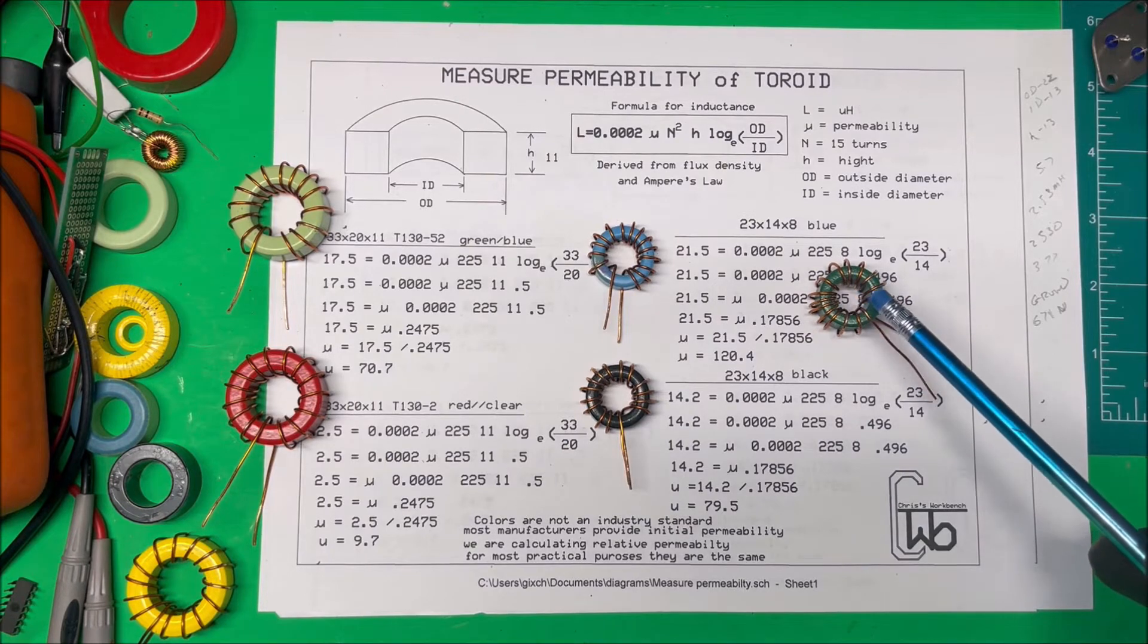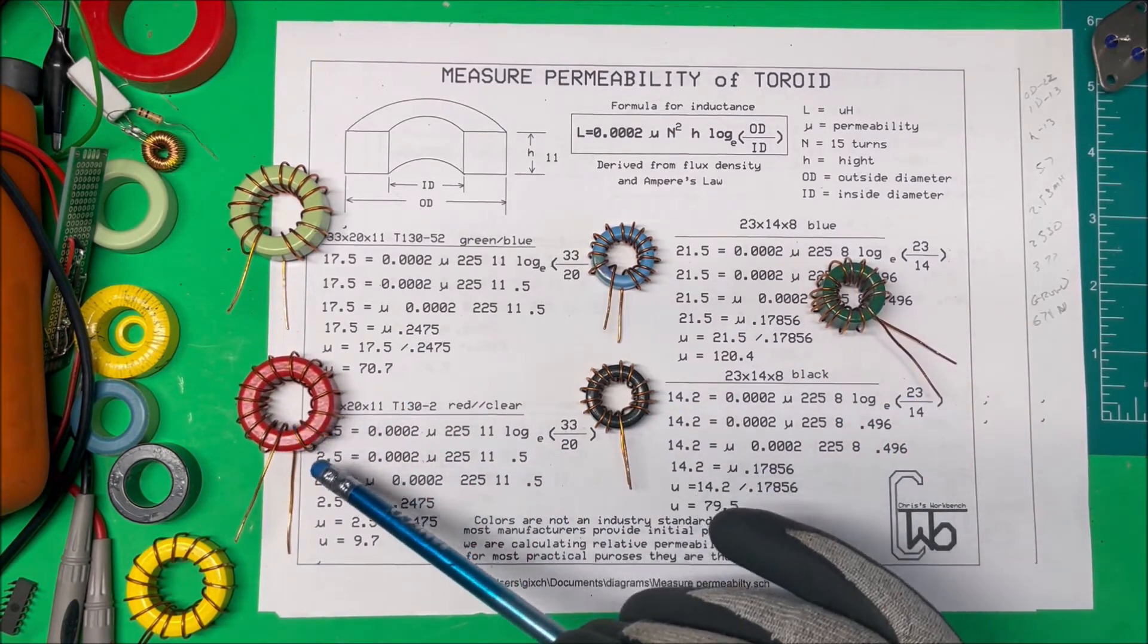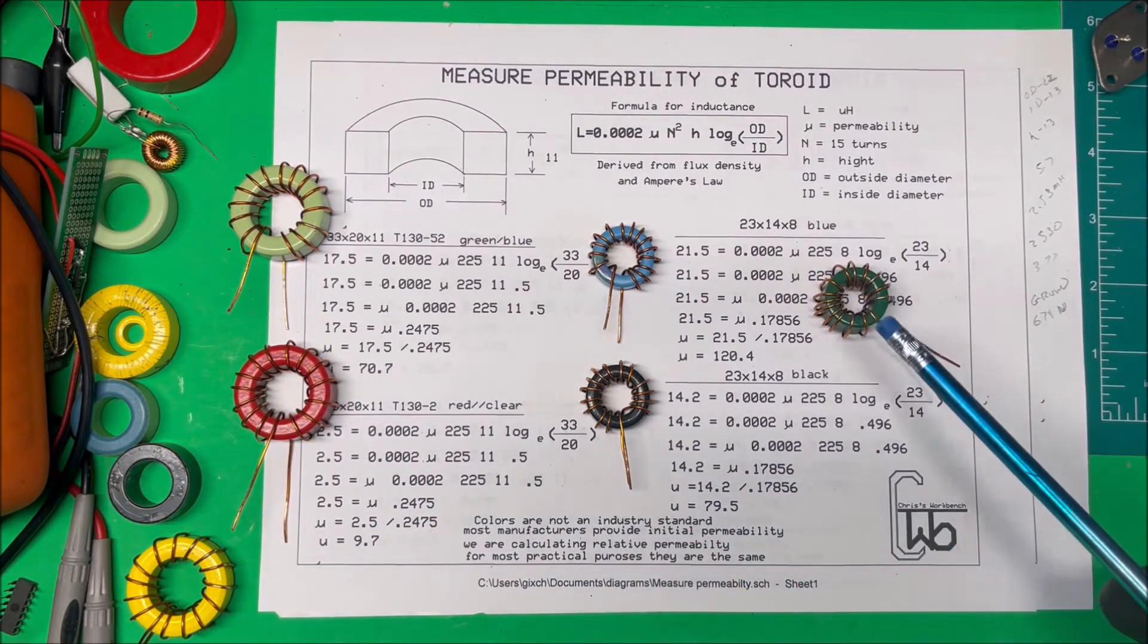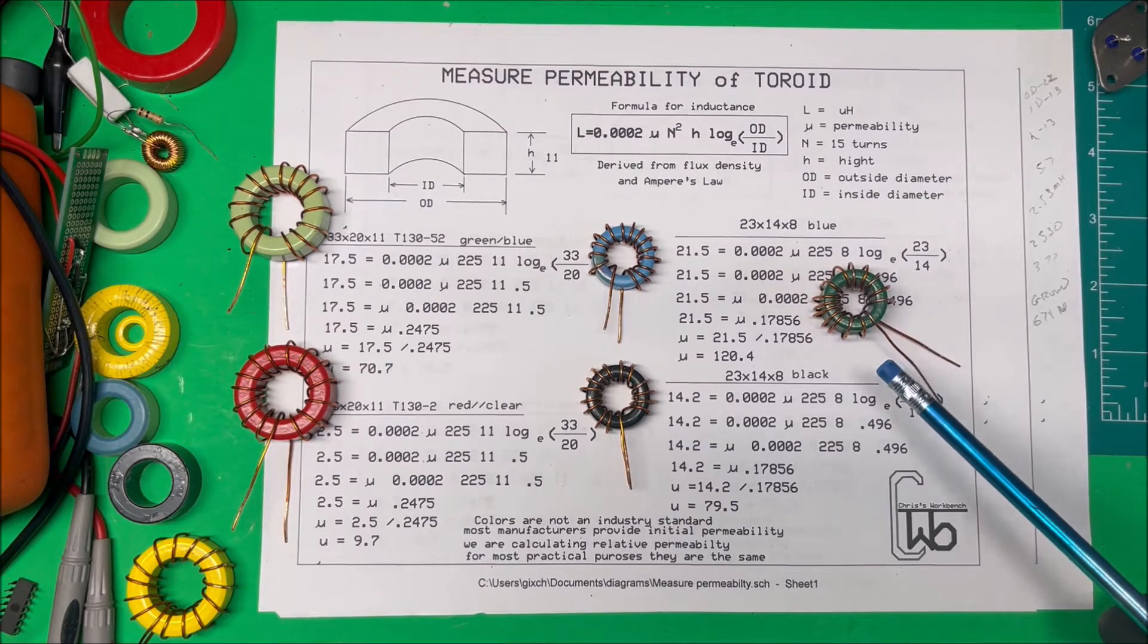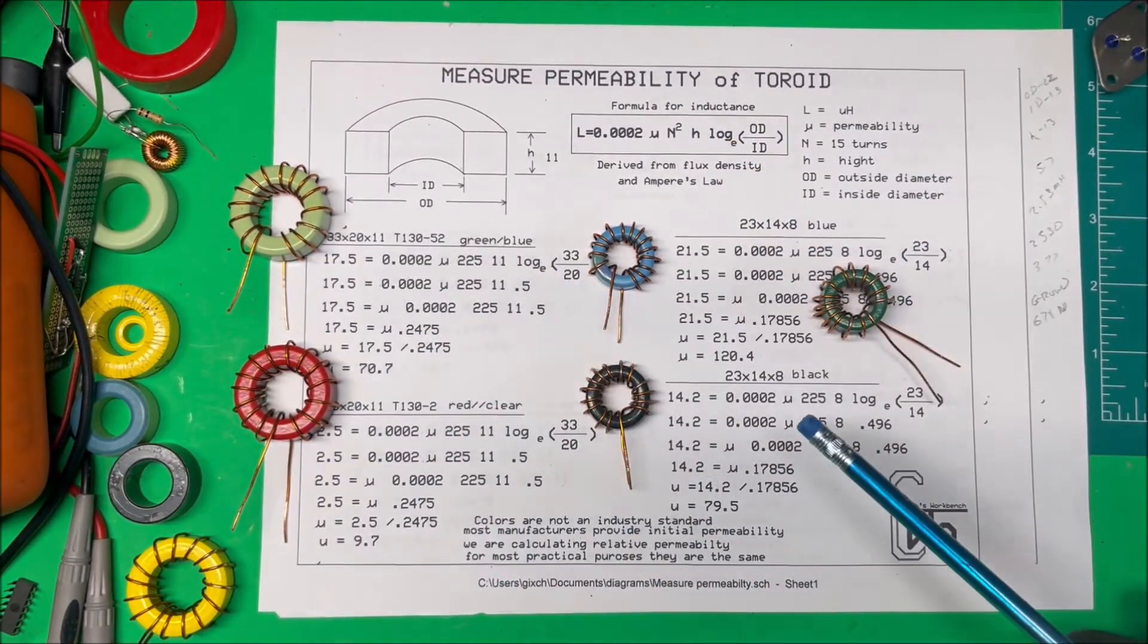These have the same amount—this has 15 turns, this has 15 turns. This has an inductance of 2.5, this has an inductance of 2530. So you can see that the permeability makes a big difference on your inductance on your core here.